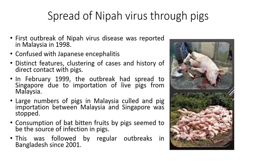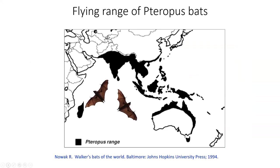An outbreak in Singapore was caused by the trade of pigs imported from Malaysia, leading to a focal outbreak in people handling the pigs. The pigs were identified as the source and culled. The problem with Nipah virus disease is that it is spread by Pteropus bats, whose flight range extends from the tip of Africa to the entire Southeast Asia region and including Australia — a range so vast they can really spread diseases. Nipah is not the only disease spread by bats; diseases like Ebola, several respiratory viruses, and rabies are also spread by bats.